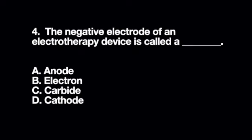The negative electrode of an electrotherapy device is called A. A. Anode B. Electron C. Carbide D. Cathode